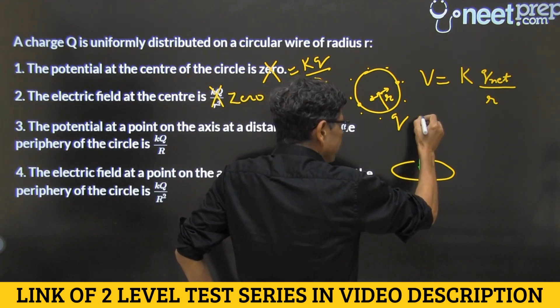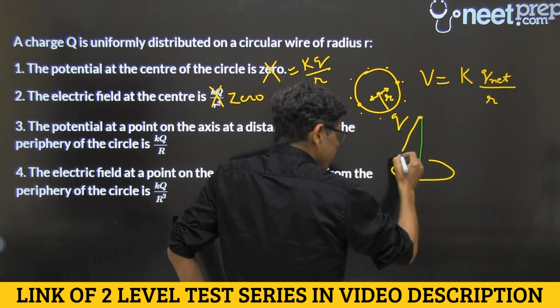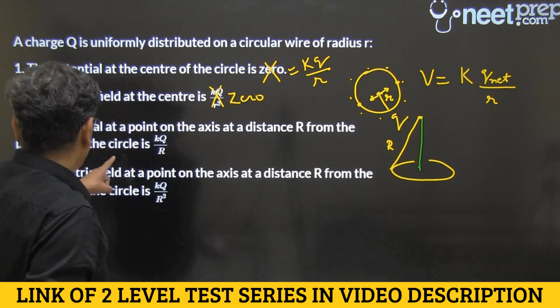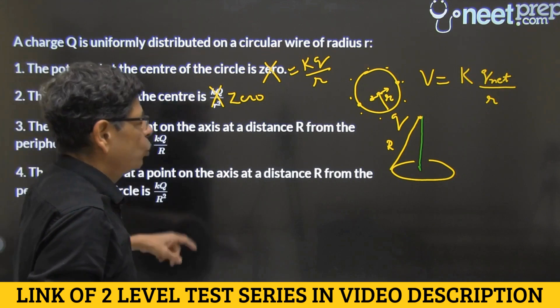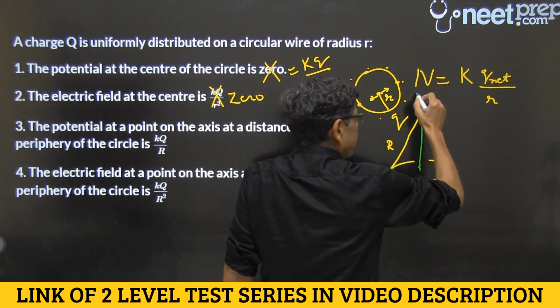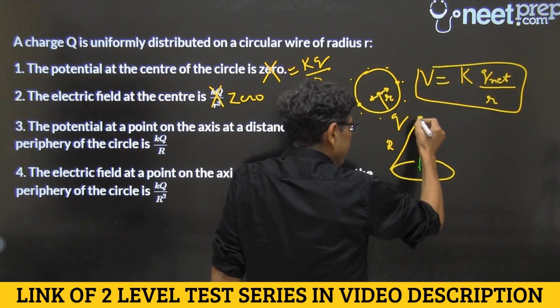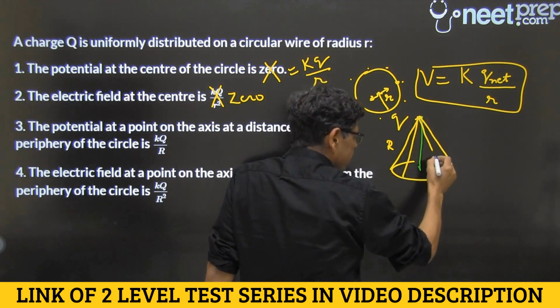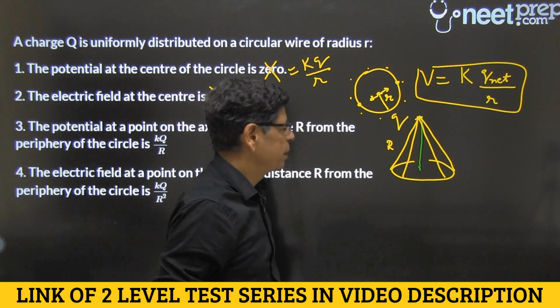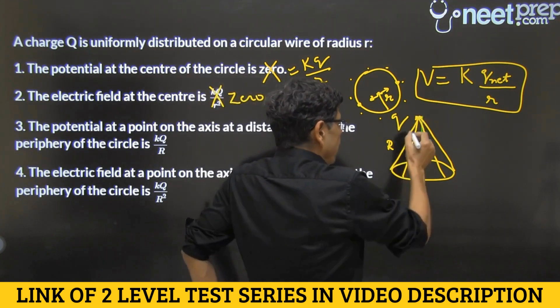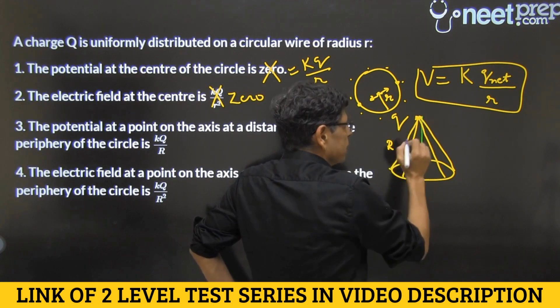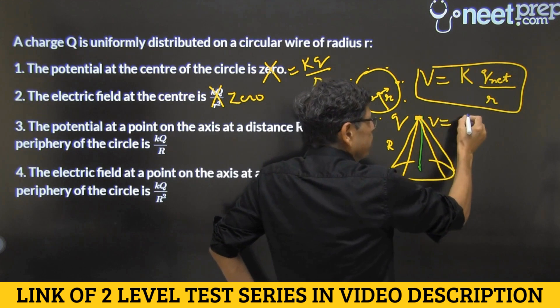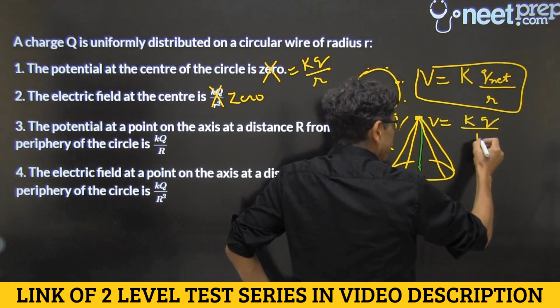So, at this point on the axis whose distance from the periphery is capital R, option three is claiming the potential is given by KQ by capital R. Now, once again, this formula can be used because all the points like this, like this or this, they are all at the same distance from our point. So all the charges are equidistant and their distance being equal to capital R, use this and we find that potential here would be KQ by capital R.